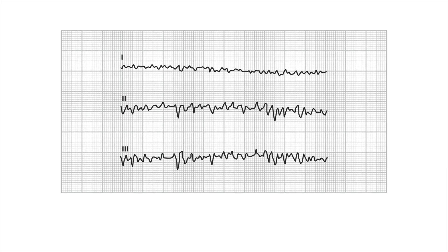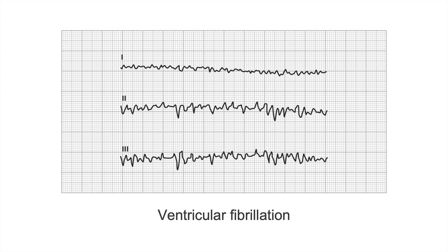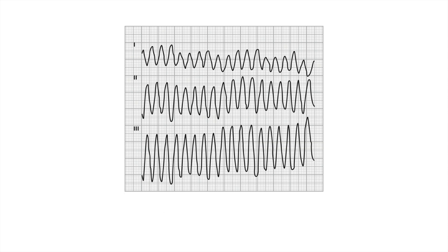Here you can see bizarre-shaped and irregular spikes up to one millivolt in amplitude. You should try to memorize this characteristic tracing and be able to recognize it immediately. It's a case of ventricular fibrillation. In this instance, the ventricles don't contract properly and the patient is in circulatory arrest. Without proper resuscitation and defibrillation, this patient will die. So always remember ventricular fibrillation, which is a truly dangerous and life-threatening entity.